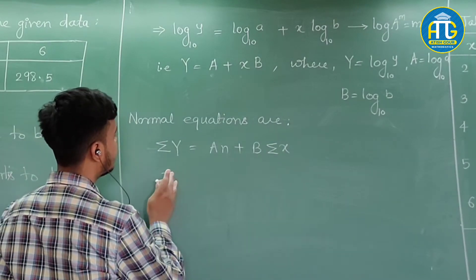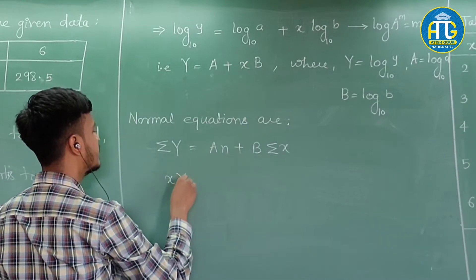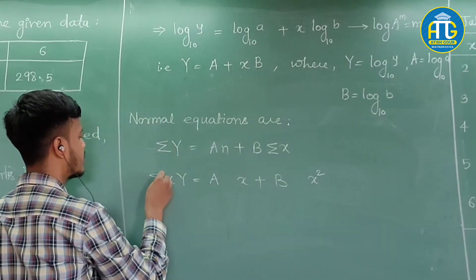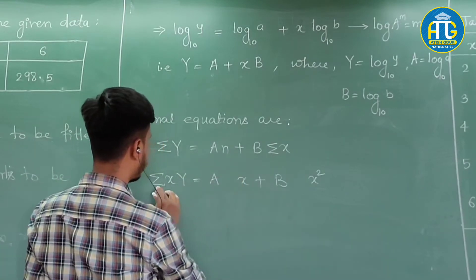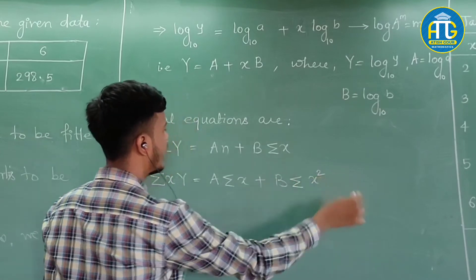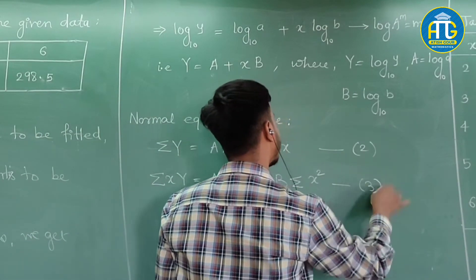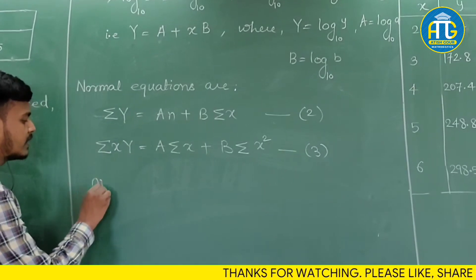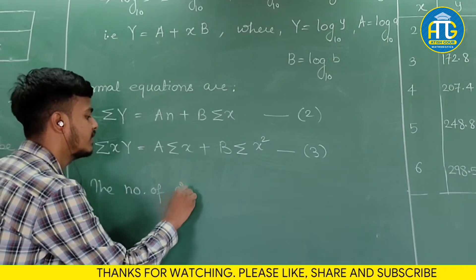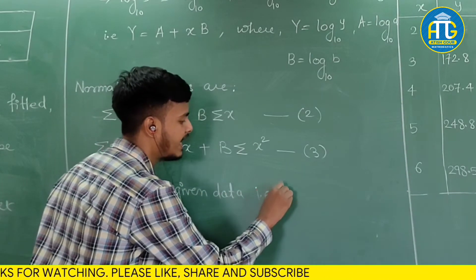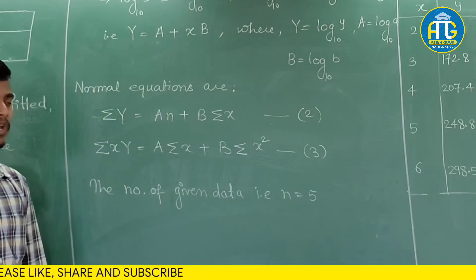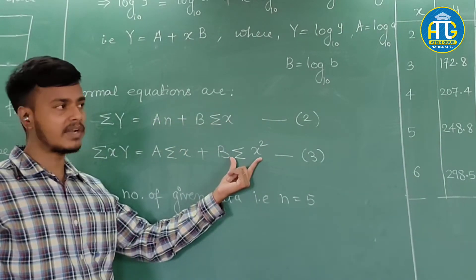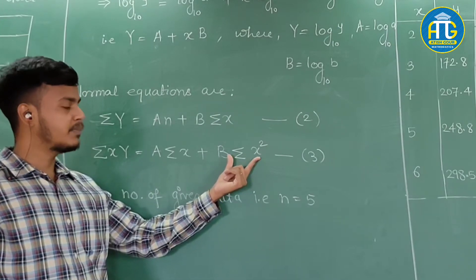Then multiply the equation by x and take summation, giving: Σ(xY) = A·Σx + B·Σx². This is equation 3. We always take summation on variables x and Y, not on constants. Five data points are given, so n = 5. The next step is to find ΣY, Σx, Σ(xY), and Σx² using tabular calculations.